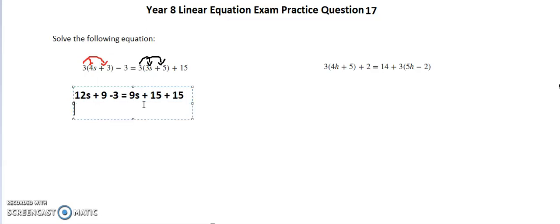We need to simplify this equation now by grouping the constants together. 9 take away 3 is 6, so it's 12s plus 6 is equal to 9s, and 15 plus 15 is plus 30.